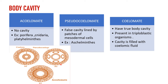In the diagram for acoelomates, no body cavity is present. In pseudocoelomates, a false cavity is lined by patches of mesodermal cells — those patches are visible in the diagram. Example is Aschelminthes (roundworms). The third type is coelomate, where a true body cavity is present.